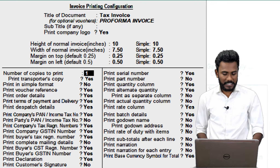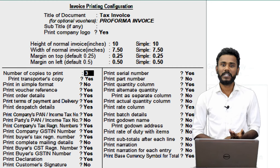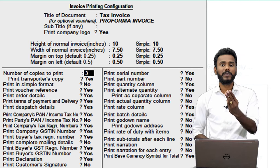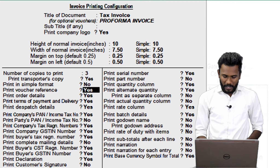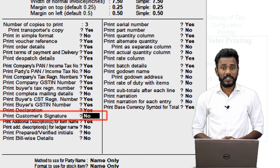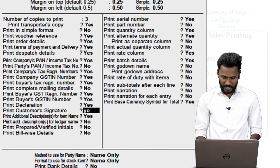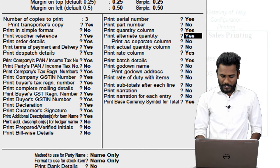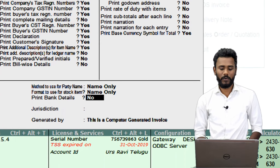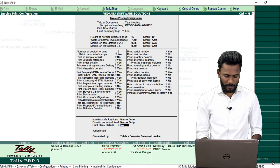So keep it at least three copies. If you press three, the first copy will be the original, the second copy will be the duplicate for transporter, and the third copy will be the triplicate for supplier. Then come down and you need to enable the feature manually — print customer's signature. I would like to take a seal and signature from the customer, so enable this feature as well. Come down again — next we need to print your bank details on the invoice. By default the system has disabled the feature Print Bank Details, so enable it — yes, I would like to print.